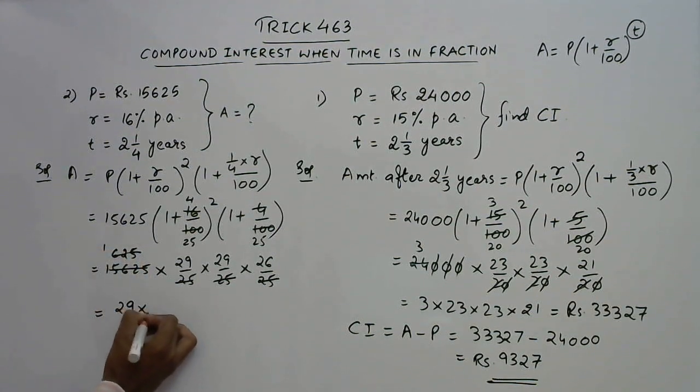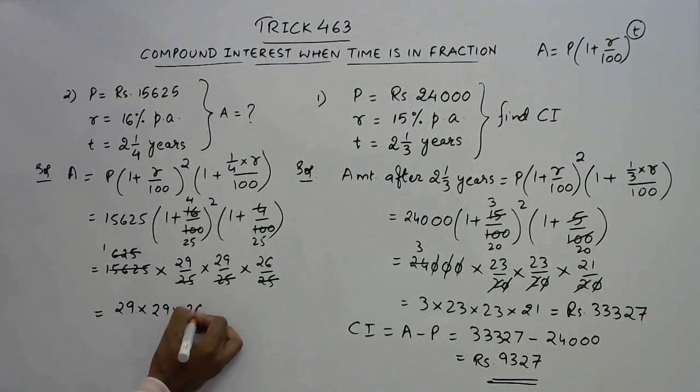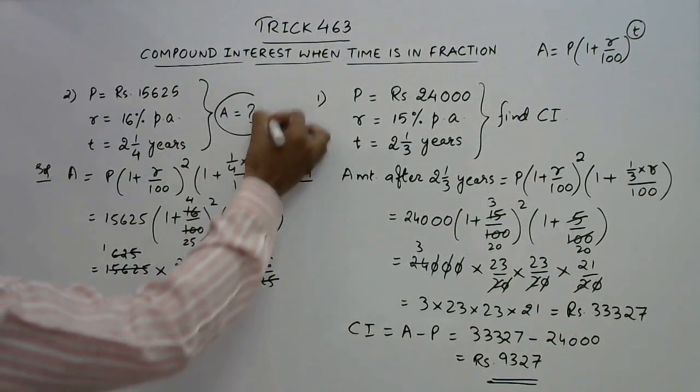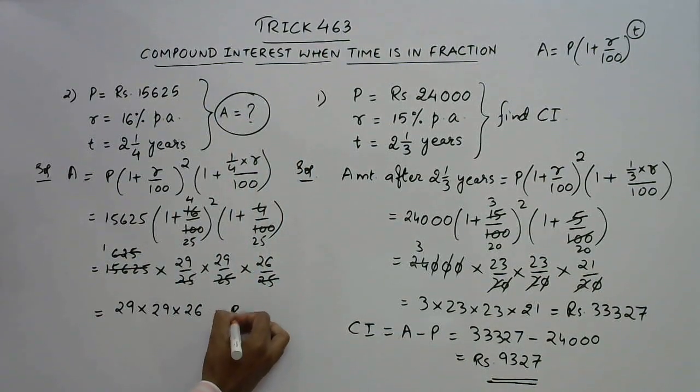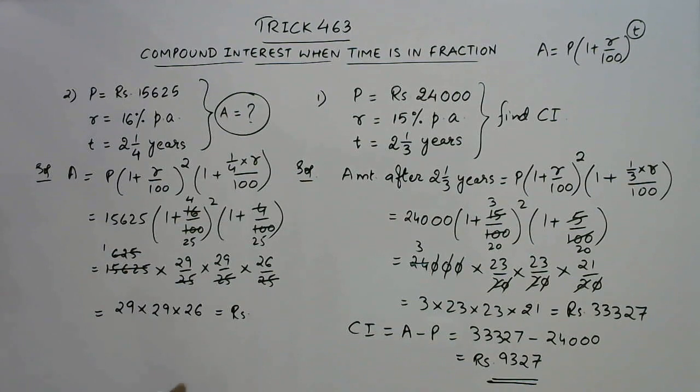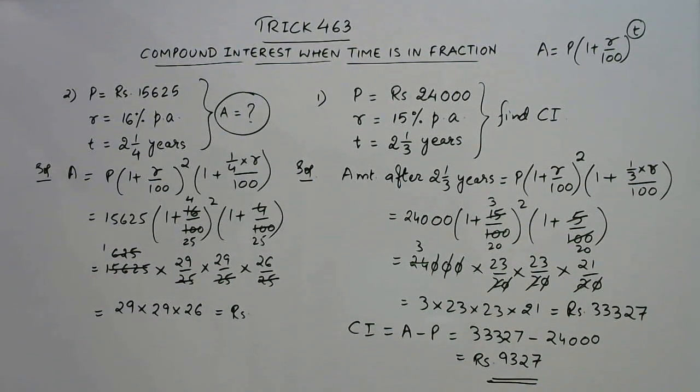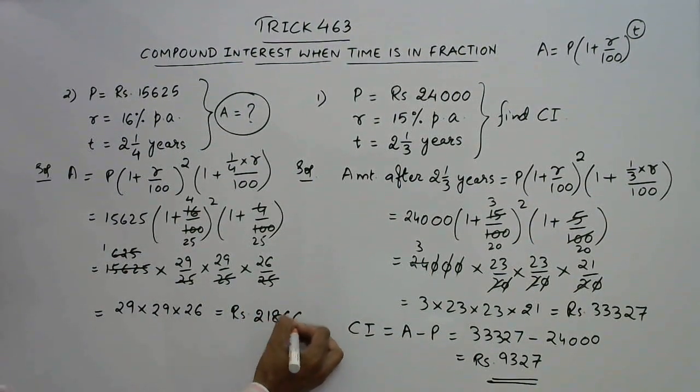So our answer will be 29 into 29 into 26, this will be the amount. So we need to calculate the amount. If you solve this, I have done this for you to save time, this is 21866. And further if you want to calculate compound interest you can apply this formula.